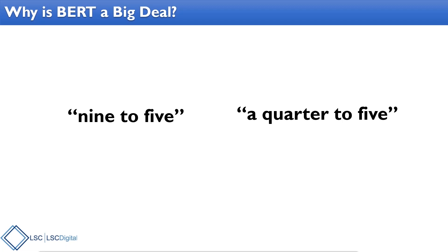Here's a basic example — two common phrases: 'nine to five' and 'a quarter to five.' Google traditionally has a hard time with the meaning of 'to' in those phrases. You and I easily know 'nine to five' means 9 a.m. to 5 p.m., and 'a quarter to five' means 4:45. But algorithms struggle — is it comparing nine to a five, or a quarter to a five? BERT helps by understanding what that word 'to' means in context.